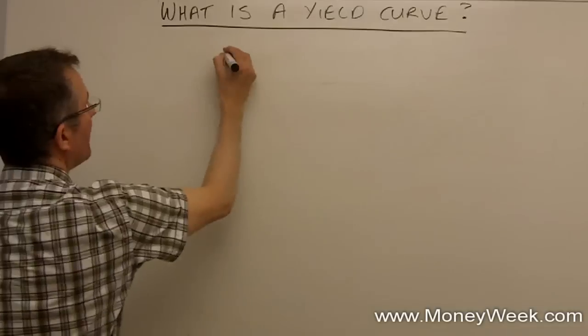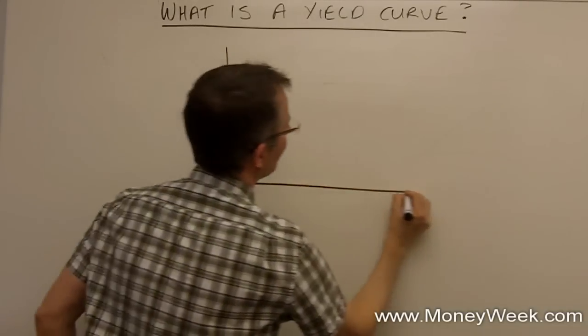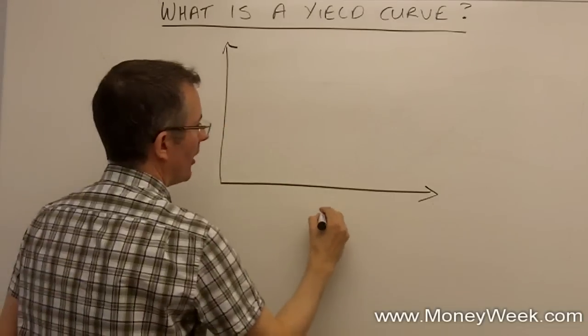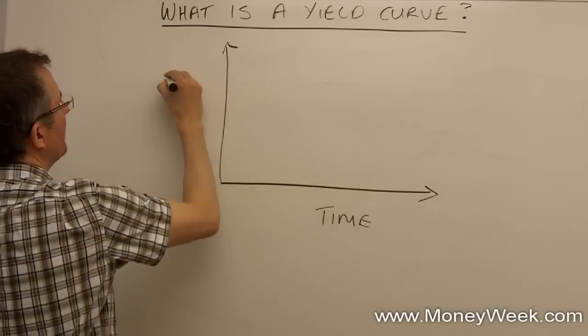Okay so how does that work? Well in a nutshell a typical curve is built on a graph so we're going to have two axes, let's say like most graphs do. Time and yield.